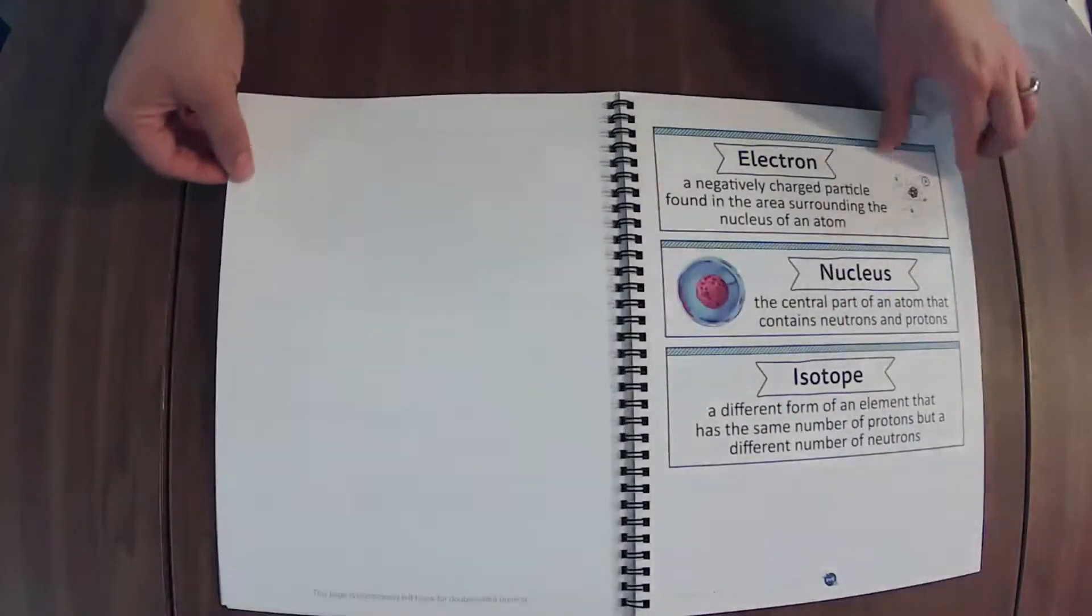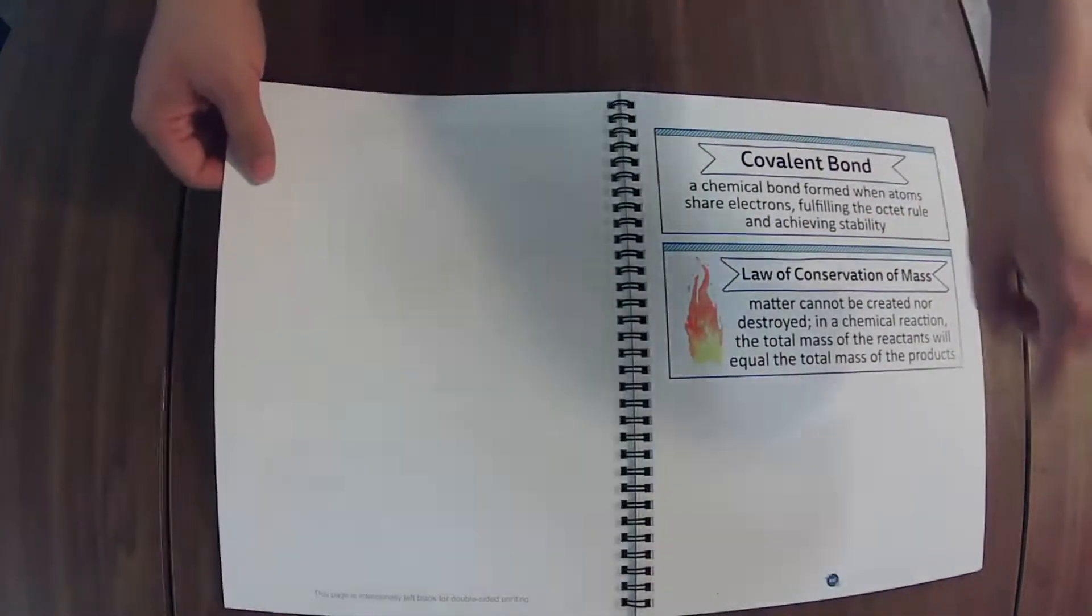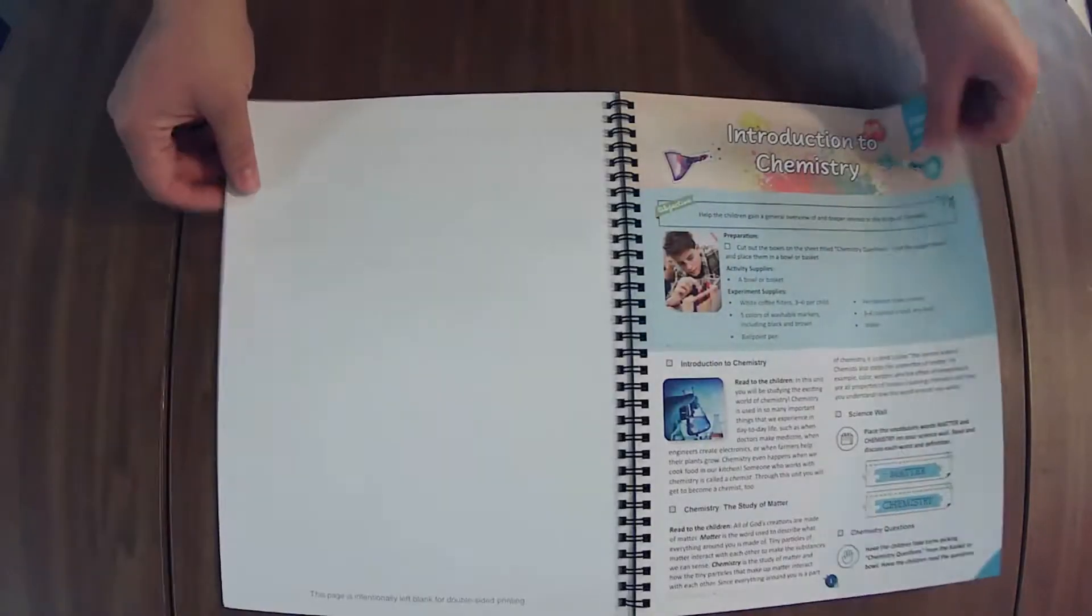And if at any point in this flip-through you need me to speed up or slow down, there's a little settings button in the bottom right hand corner that you can adjust my speed with.